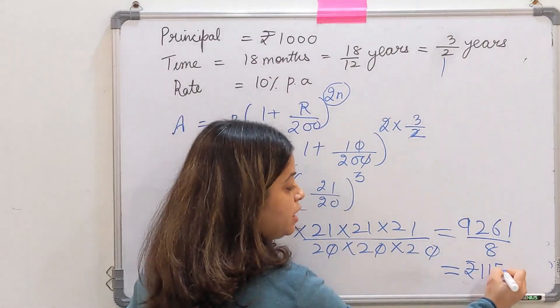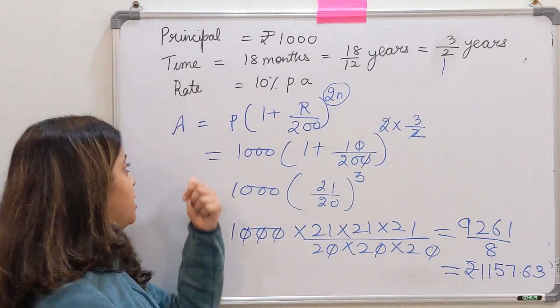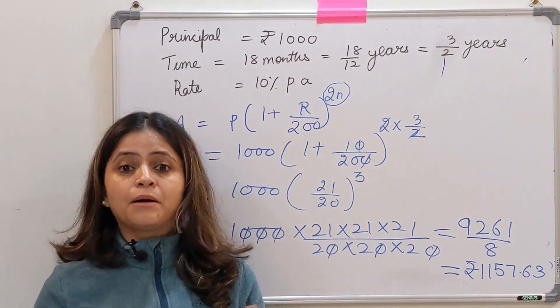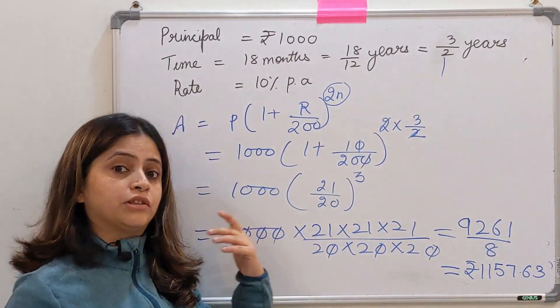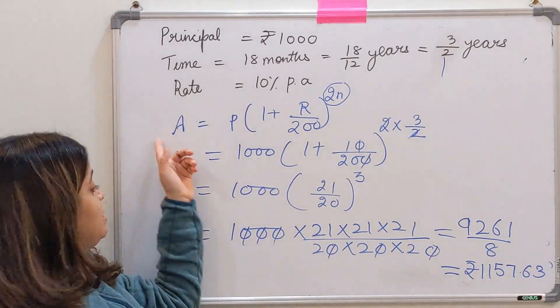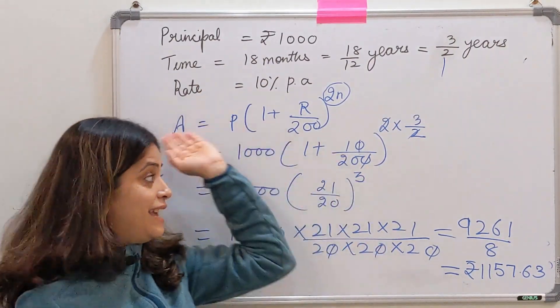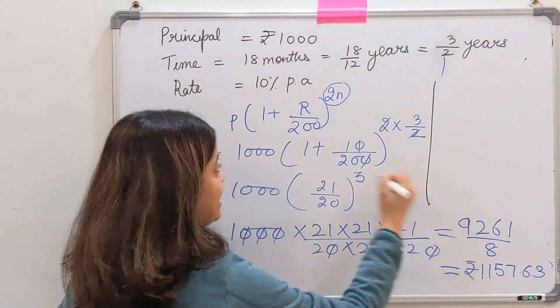यह क्या आ गया मेरा? यह आ गया amount. निकालना क्या था? Compound interest. अब next step: compound interest क्या होता है? Amount after three years minus principle. तो तीन साल बाद आपको इतना मिलने वाला है. Deposit आपने एक हजार रुपये किए थे, तो उसको कर दो minus. देखने पर यह answer नजर आ गया.